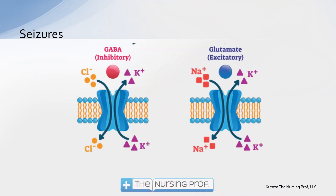Let's blow this up and take a look at those pathways. We have the GABA pathway — that's the inhibitory pathway — and we have the glutamine pathway, which is the excitatory pathway. Each one of these pathways uses electrolytes to convey the message. If there's an imbalance, we end up with too much excitation and not enough inhibition, leading to uncontrolled electrical impulses in the brain.